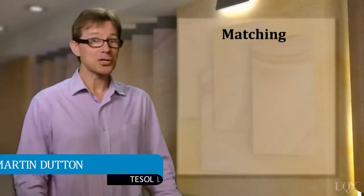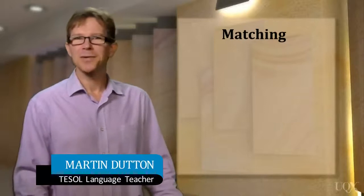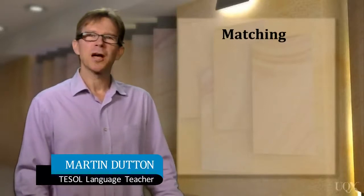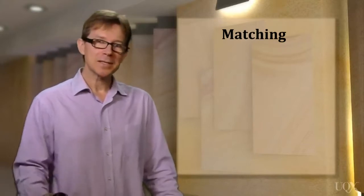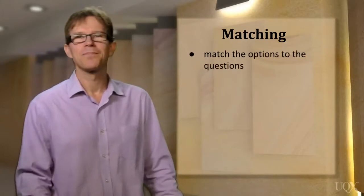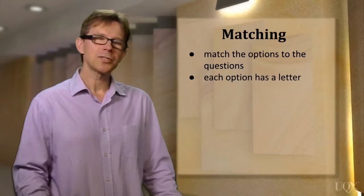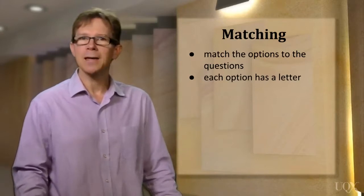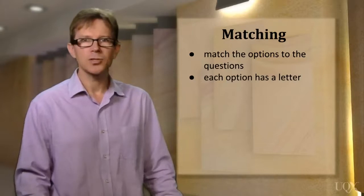Now let's look at the matching task. You may need to do this type of question in any of the four sections of the IELTS Listening Test. In this task you're given a list of options and a list of questions. You have to match the options to the questions. Each of the options has a letter, so you write a letter such as A, B or C next to each question.